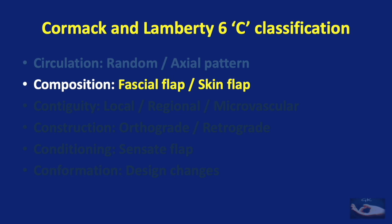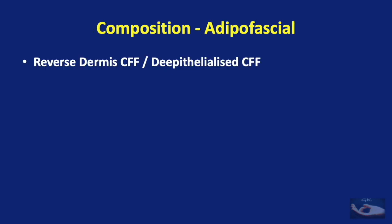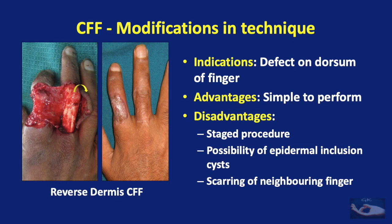Having understood the different intrinsic flaps based on circulation, we shall now see the different flaps based on composition. The flap could be composed of just adipofascial tissue — the best example being the reverse dermis cross finger flap or de-epithelialized cross finger flap. Here, the dermal flap is raised from the donor finger, and the adipofascial flap is raised as a cross finger flap to resurface the dorsal aspect of the recipient finger, then covered with a skin graft. The indication is a defect on the dorsum of the finger, but it is a staged procedure with risk of epidermal inclusion cysts and scarring of the neighbouring finger.